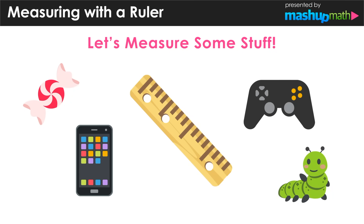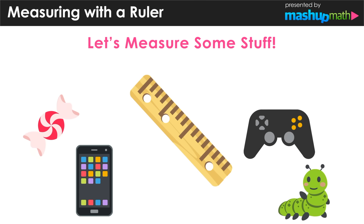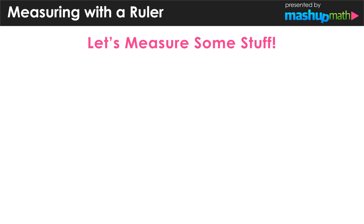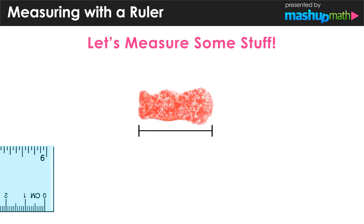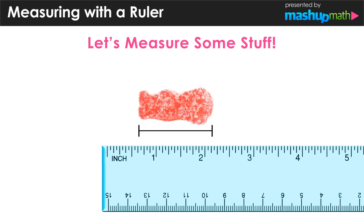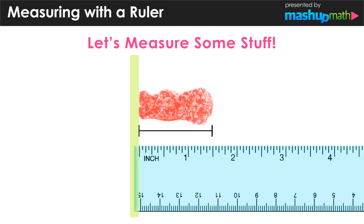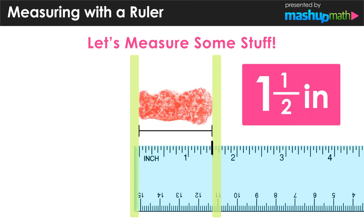Now that you have a better understanding of using a ruler, let's practice measuring some different items. Let's start by finding the height of this piece of candy. We can turn the figure on its side, line up the zero inch mark with the left edge, and see how far it goes to the right edge. This piece of candy has a length of one and a half inches.